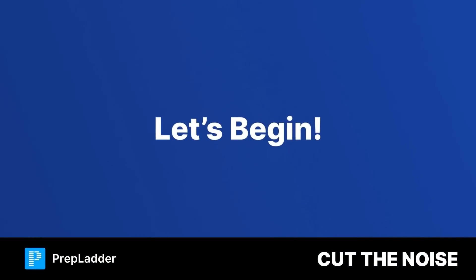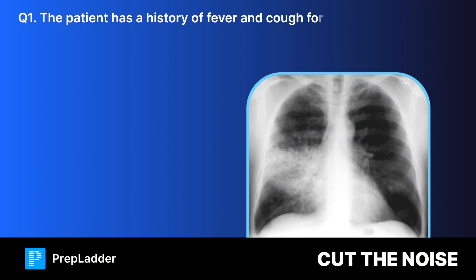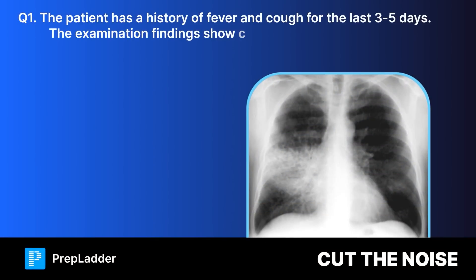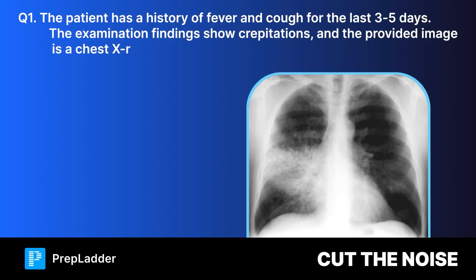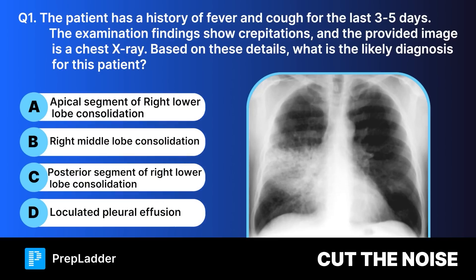Question one: A patient has a history of fever and cough for the last three to five days. Examination findings show crepitations and the provided image is a chest X-ray. Based on these details, what is the likely diagnosis? The correct answer is right middle lobe consolidation.